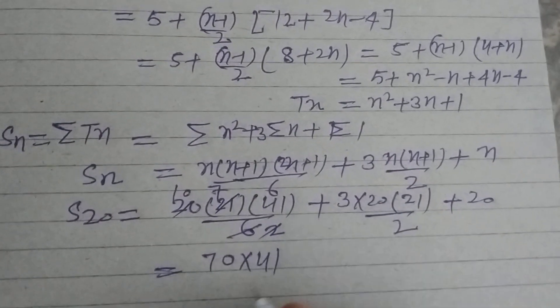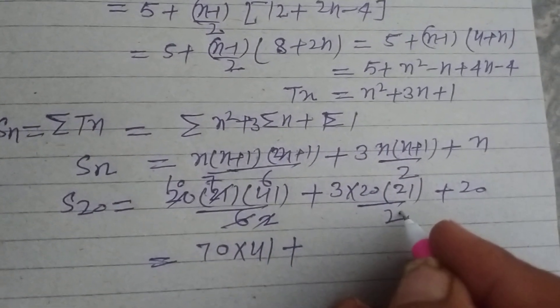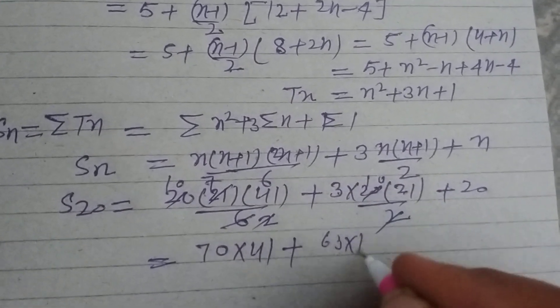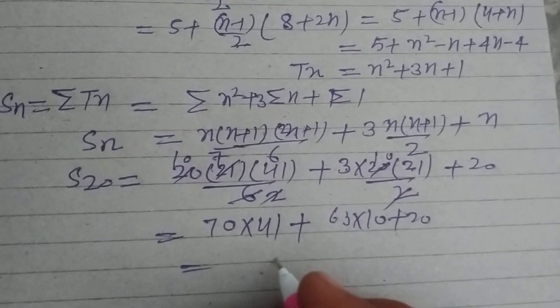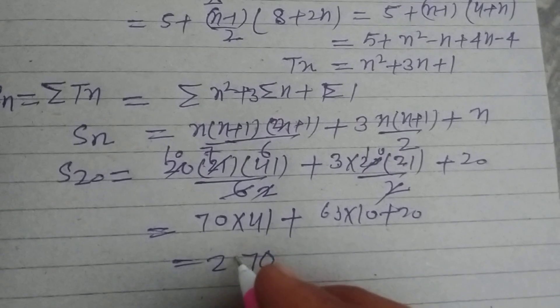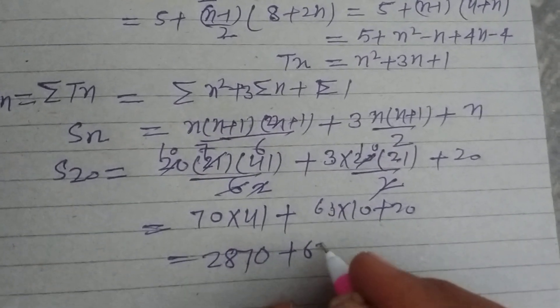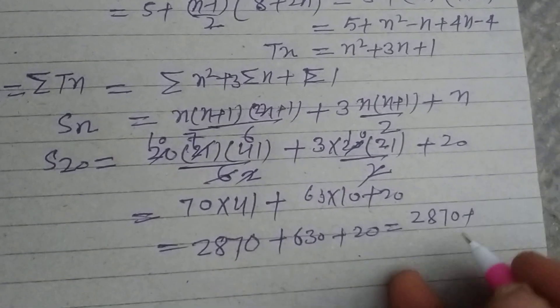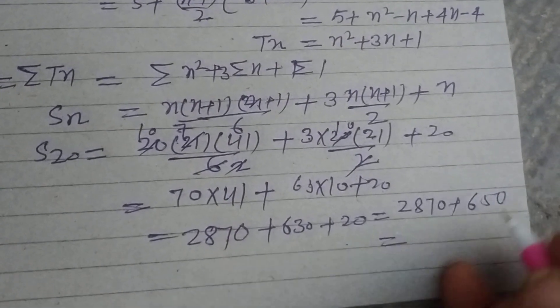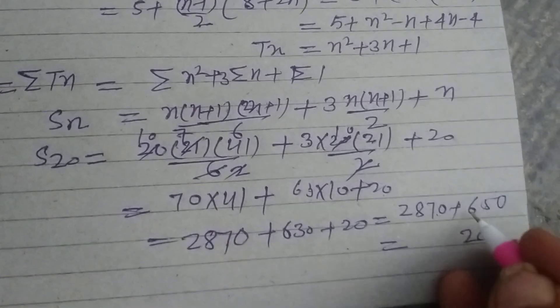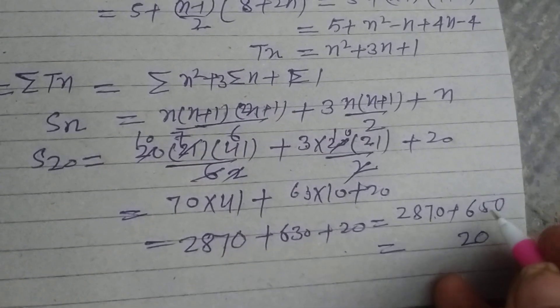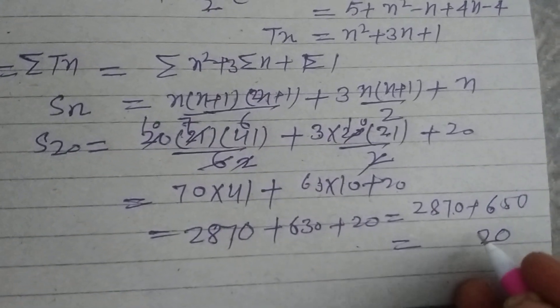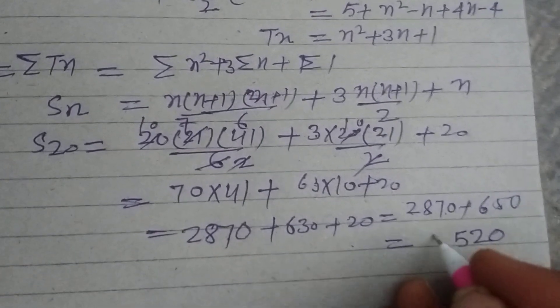3 to 6 is 3, 7 to 21 and 2 to 10 is 20, so this is 70 into 41 plus, this is 63 into 21, 63 into 10 plus 20. So 0, 7, 7, 7, 4, 2870 plus 630 and this is 20. So finally 2870 plus 630, on adding this 0, 5, 7, 12 and this is 0, 5, 7, 12, and 6, 8, 14, 1, 15 and 1 carry, this is 3. So 3520 is the answer.